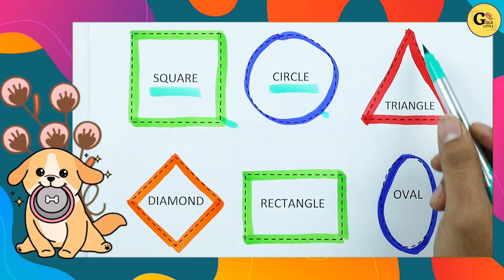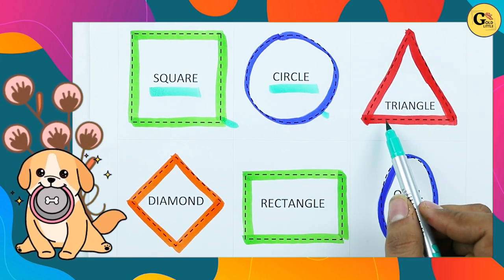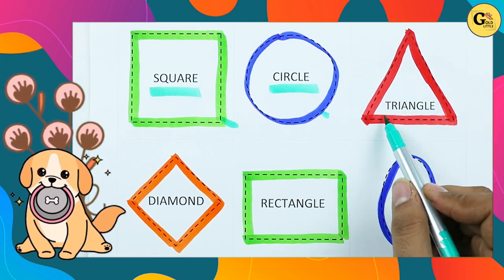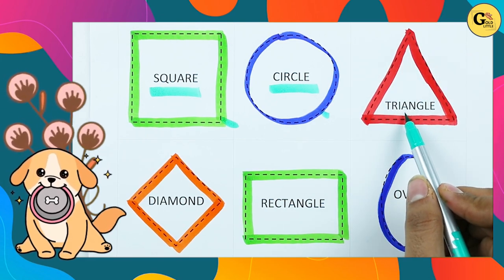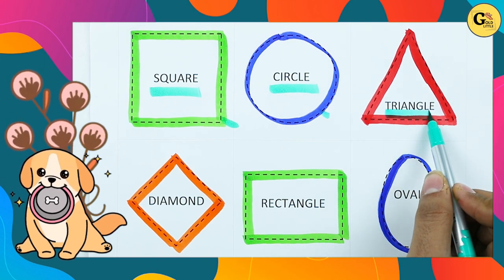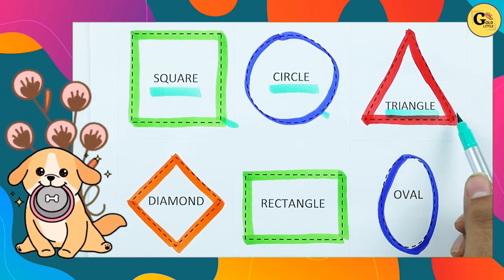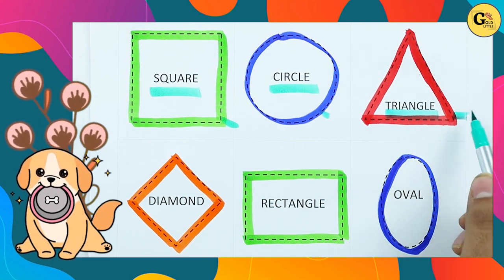Which shape is this? Triangle. T-R-I-A-N-G-L-E. It's a triangle with red color.